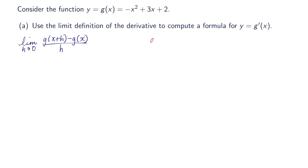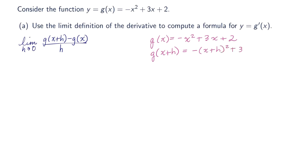Now off to the side, I'm going to write down what g of x is: negative x squared plus 3x plus 2. And I'm going to write what g of x plus h is — we just replace the input x with x plus h. So negative x plus h squared plus 3 times x plus h plus 2. And x plus h squared is x squared plus 2xh plus h squared.